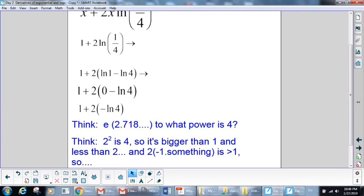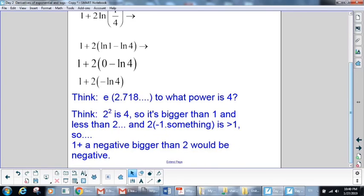And that leads us to this question. Since we know e is right around 2.718, what power of e would give us 4? If we think about 2 squared, that would be a little bit bigger than, that's 4. So e to some power, that power would have to be between 1 and 2. So we know that we have a number that's greater than 1. And so that leads us to knowing that we have 1 plus a negative, bigger than 2, because we're multiplying 2 times a larger negative number. And so that means our answer is going to be negative.